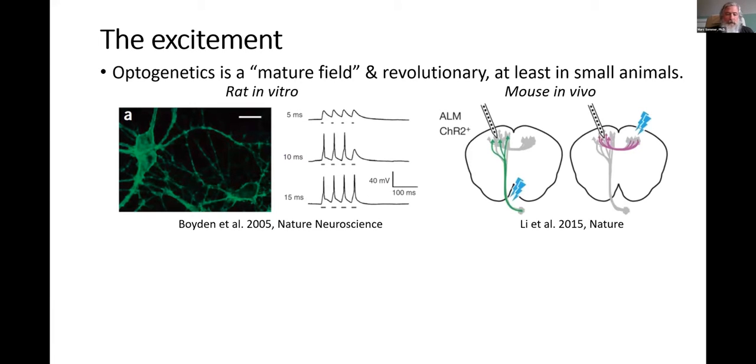And 10 years later and beyond, this has developed into an approach for so-called circuit busting or circuit interrogation in rodents, in finches as Rich Mooney talked about, in flies, in zebrafish, and many small animals.